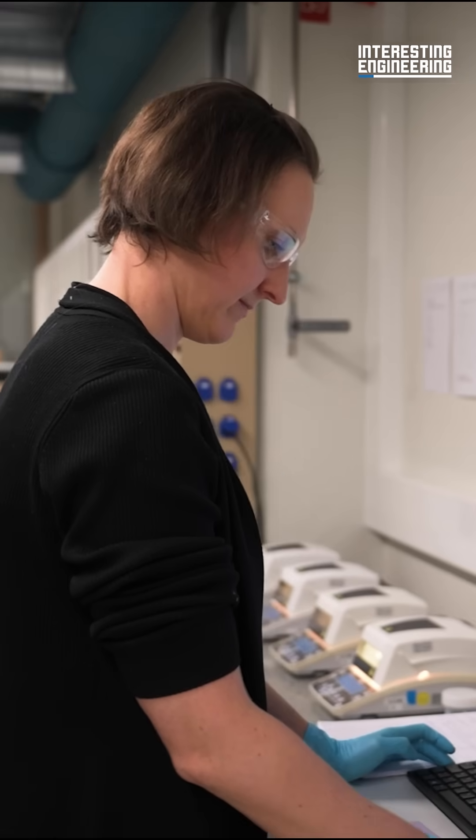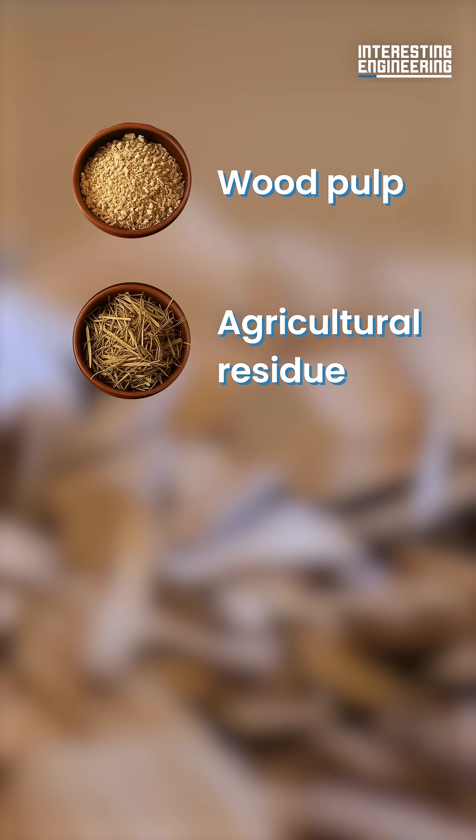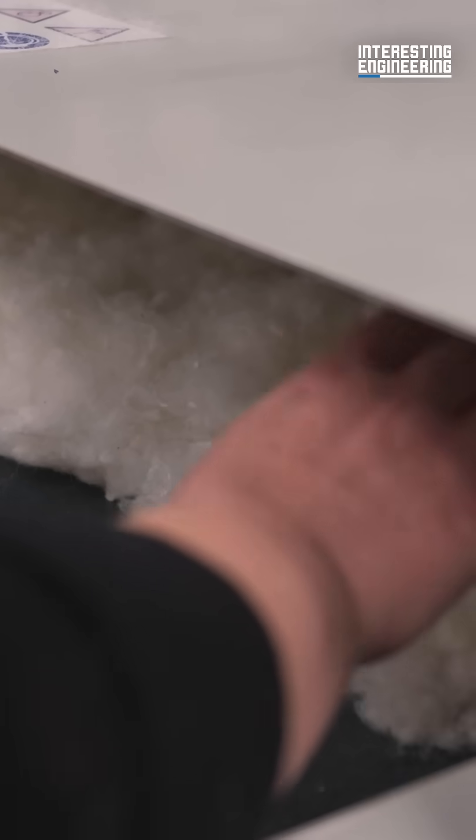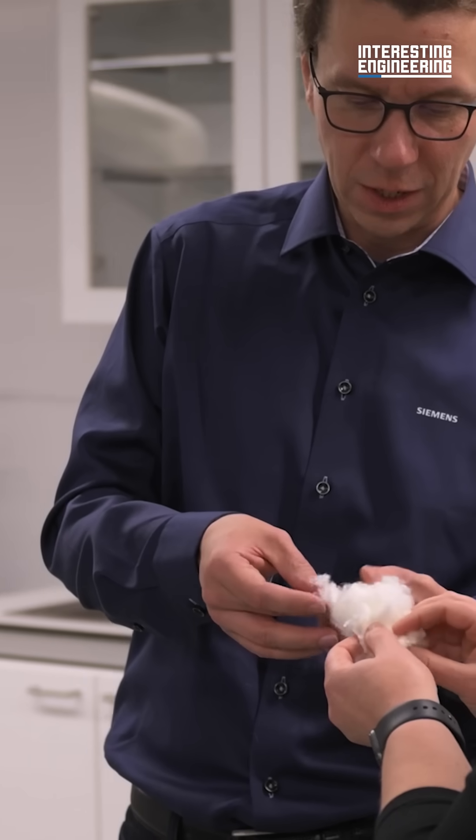The process begins with natural raw materials: wood pulp, agricultural residue, textile scraps, even discarded leather. These materials are the foundation of Spinova's breakthrough fiber.